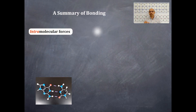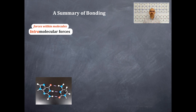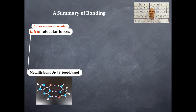The first thing that we have are intramolecular forces. What are intramolecular forces? Intramolecular forces are forces within a molecule. An example of that would be a metallic bond — that is with like iron and another iron — and these bond energies are between 75 and 1000 kilojoules per mole.